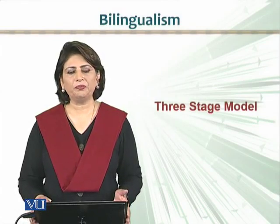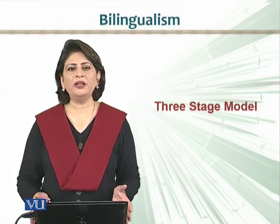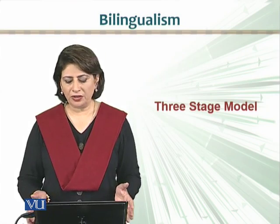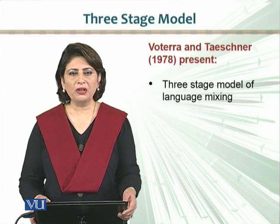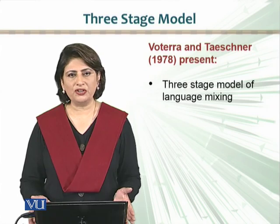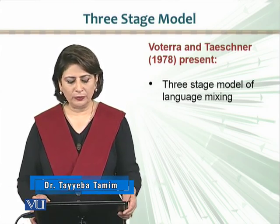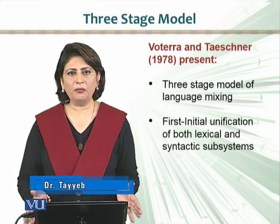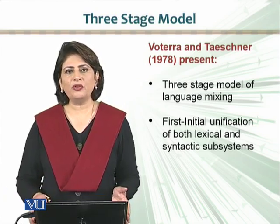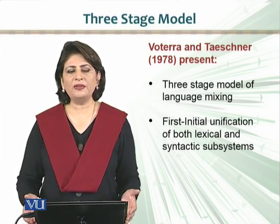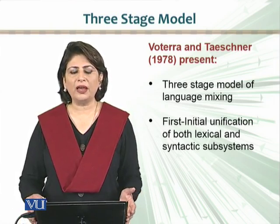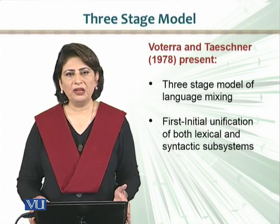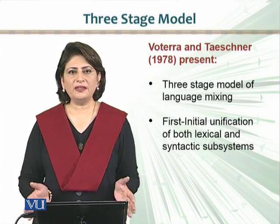A three-stage model. The researchers who claim that there exists a unitary language system in the minds of bilingual children also present a three-stage model to explain how children gradually begin to differentiate between different languages. This model was presented by Volterra and Taeschner in 1978. They argue that the first stage is when a child exposed to different languages has a single repertoire or unitary language system, which may contain items from both languages, yet the child considers them as a single language system.